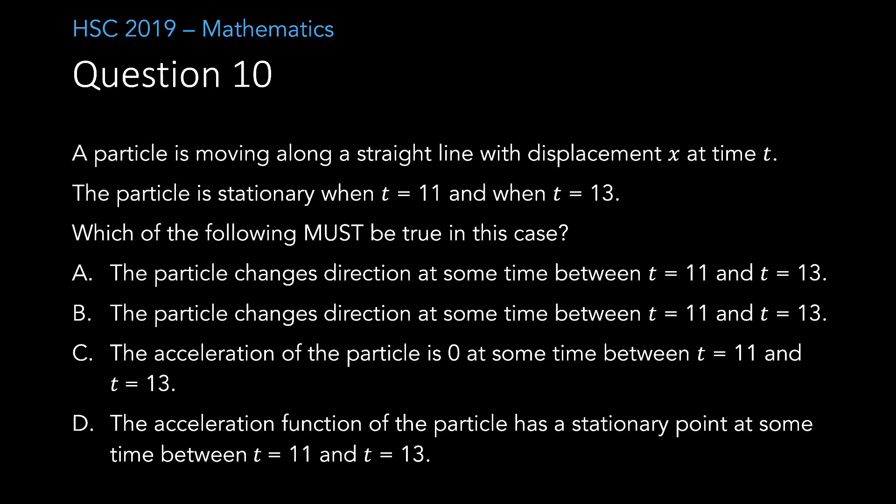Question 10. A particle is moving along a straight line with displacement x at time t. The particle is stationary when t equals 11, and when t equals 13, which of the following must be true in this case? This question is easy to do if we cancel out all the false options, but let's consider why C is actually true. Let's consider the velocity function. We know that it equals 0 at t equals 11 and t equals 13. We are trying to show that the velocity function must have a stationary point between t is 11 and t is 13.